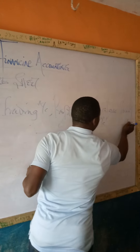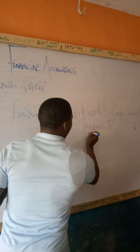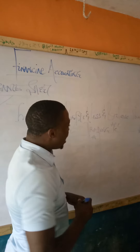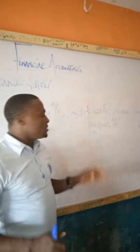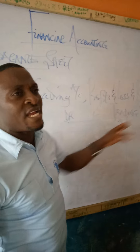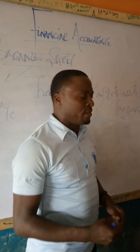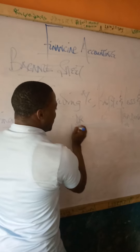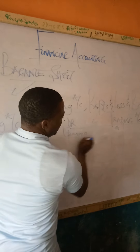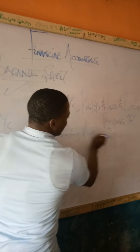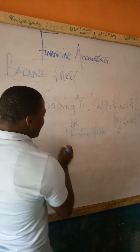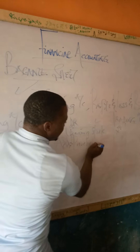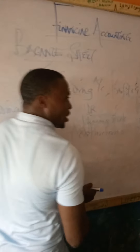Under trading accounts, we have a credit side and a debit side. The debtor is the person who owns the business, while the creditor is the person to whom the business is owing. Under trading accounts on the debit side, we have our opening stock, then we have purchases — that is the goods you purchase during the business. You add purchases to your opening stock.